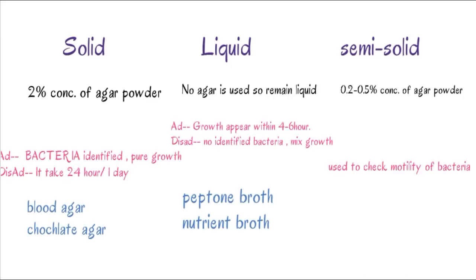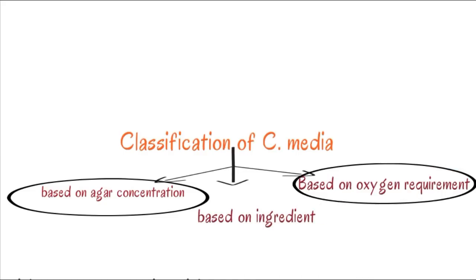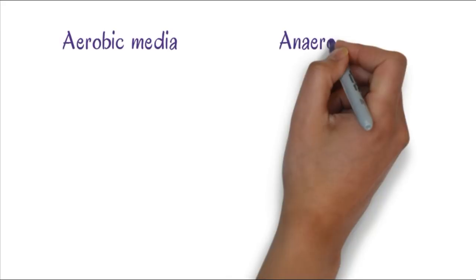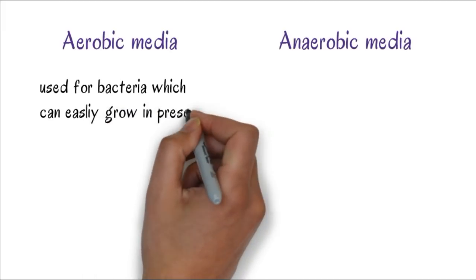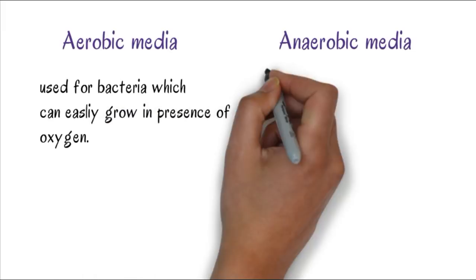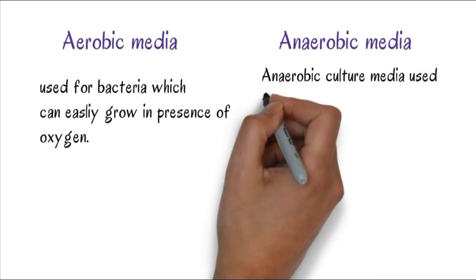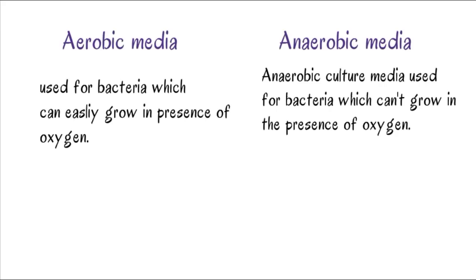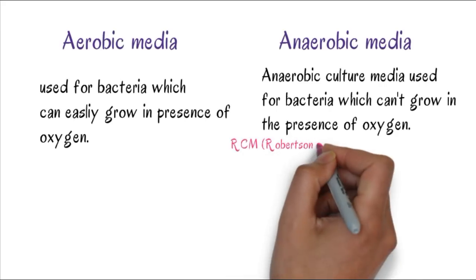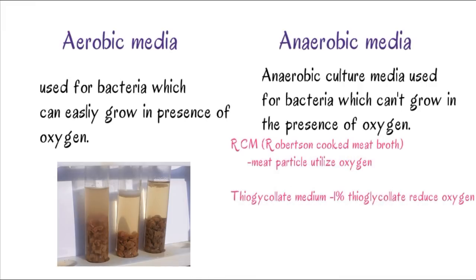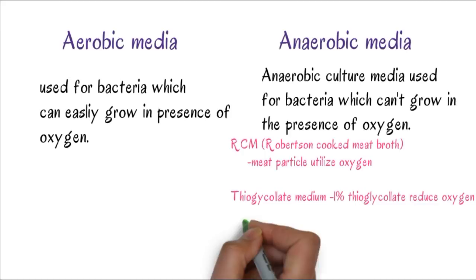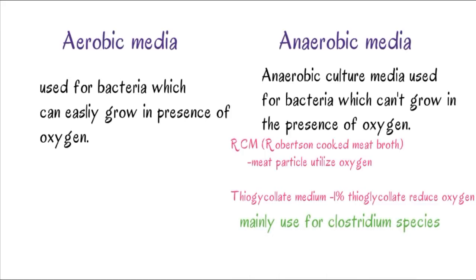Based on oxygen requirement, we divide it into aerobic and anaerobic media. Aerobic bacteria utilize oxygen and grow best in oxygen. Anaerobic media are used for bacteria which cannot grow in the presence of oxygen. Most media are aerobic, but for anaerobic we have RCM Robertson Cooked Meat, which contains meat particles that utilize oxygen, and thioglycollate medium which contains 1% thioglycolate to reduce oxygen. These media are used for Clostridium species.